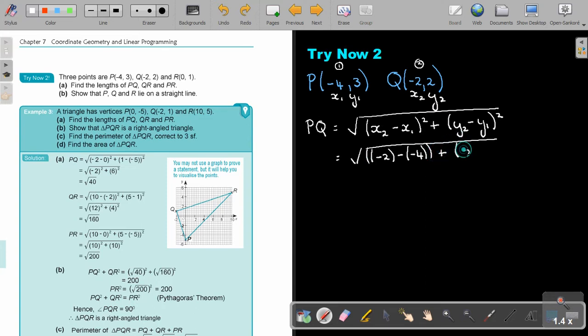Plus Y2, so it's 2 minus 3 and that's square. And that is going to give me an answer. This is negative 2 plus 4, so it's 2 square. Plus negative 1 square.